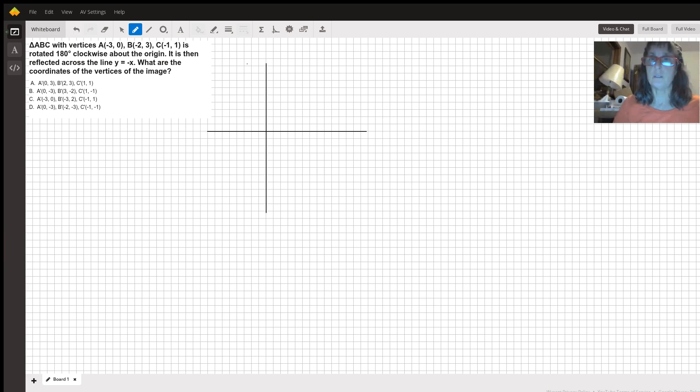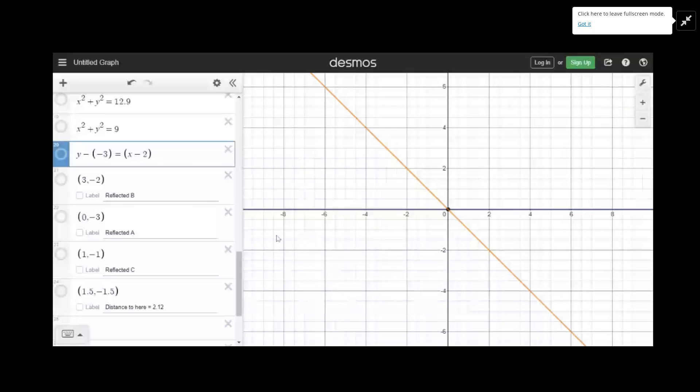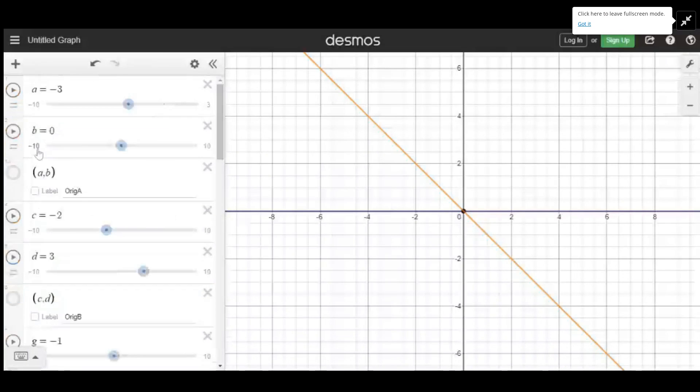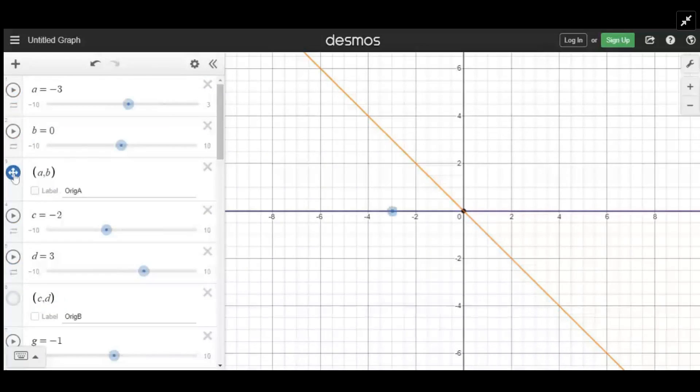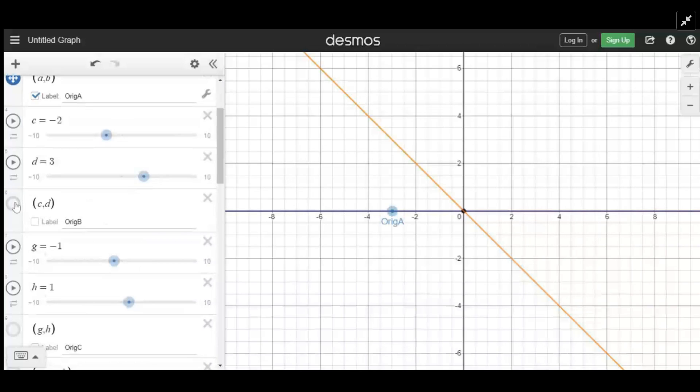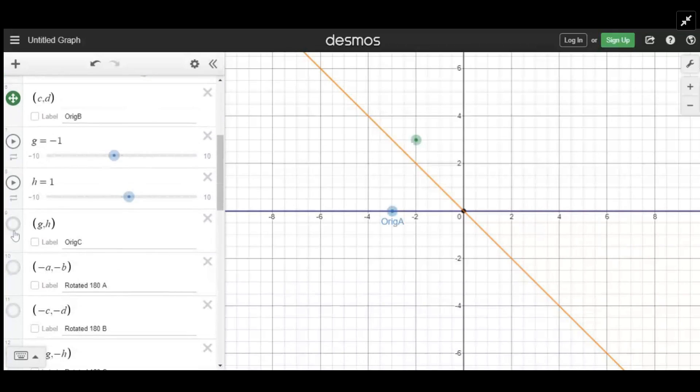It helps a lot if you can visualize it. Here's our original point A at negative three, zero. Our original point B was at negative two, three, and our original point C was at negative one, one.